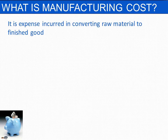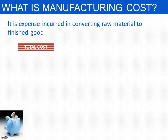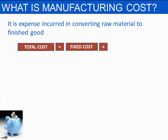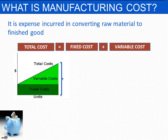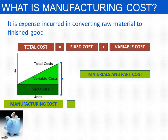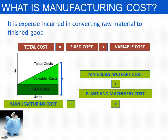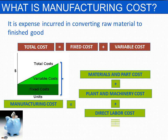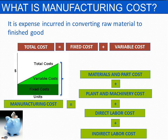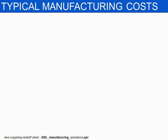What is manufacturing cost? It is the expense incurred in converting raw material into finished goods. At a very top level, total cost is equal to the sum of fixed cost plus variable cost. So where is manufacturing cost in this? Manufacturing cost equals material cost and part cost, plus plant and machinery cost, and it includes direct labor cost and indirect labor cost.